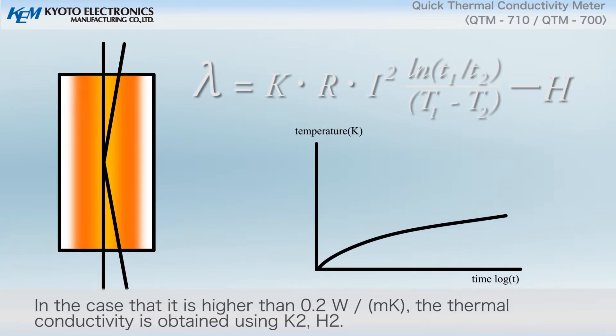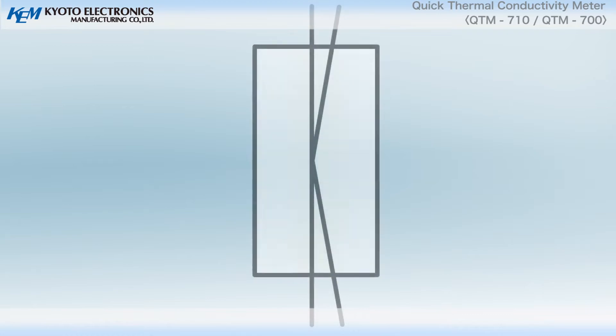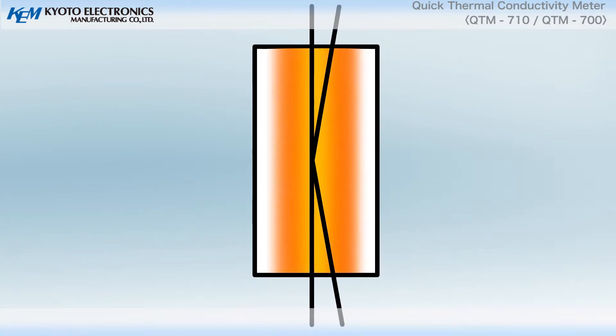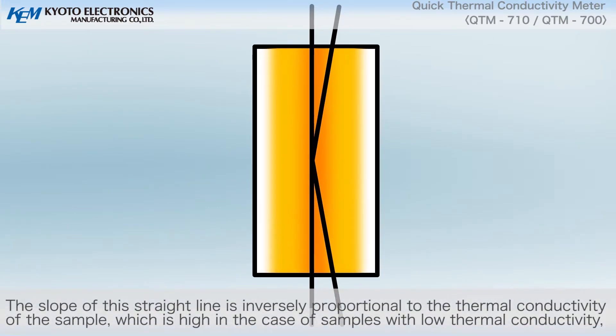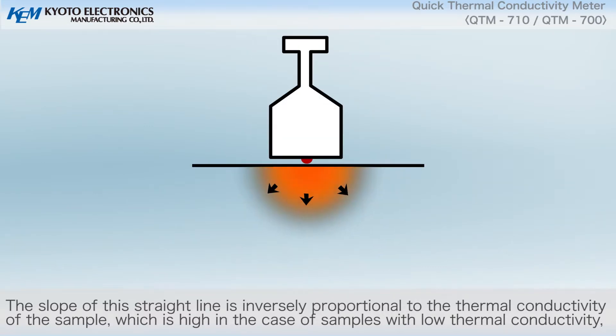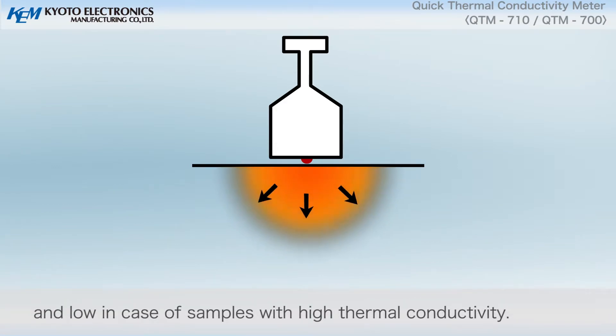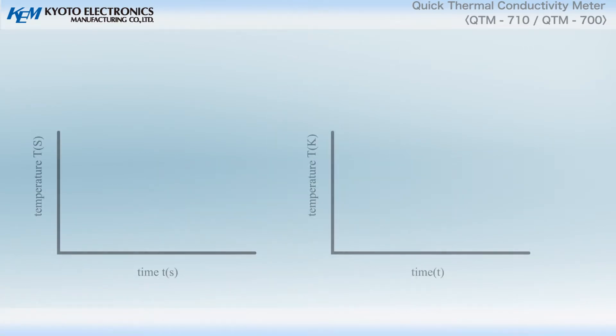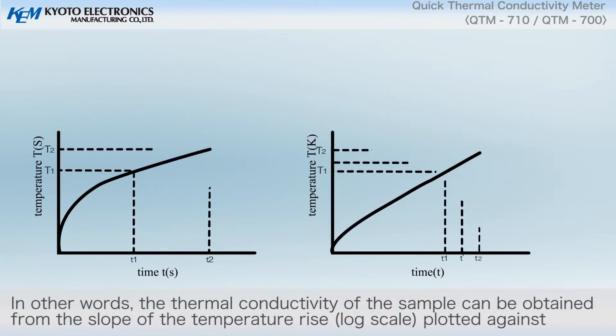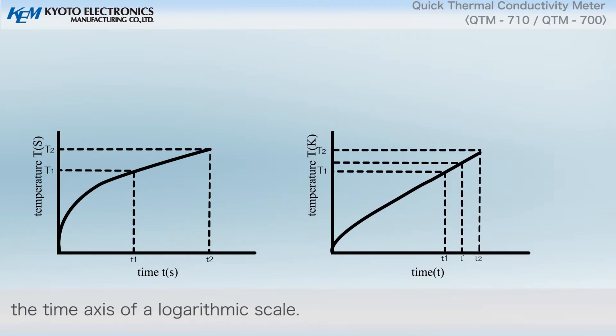If a constant current is passed through a heating wire stretched straight across a sample, heat is generated and the temperature of the heating wire rises. The slope of this straight line is inversely proportional to the thermal conductivity of the sample, which is high in the case of samples with low thermal conductivity and low in case of samples with high thermal conductivity. In other words, the thermal conductivity of the sample can be obtained from the slope of the temperature rise plotted against the time axis of a logarithmic scale.